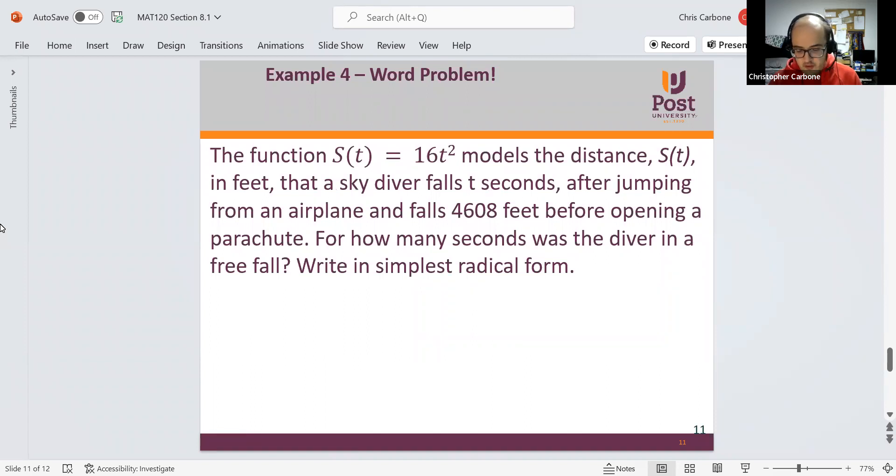For example 4, I have the function s of t equals 16t squared models the distance, s of t, in feet that a skydiver falls t seconds after jumping from an airplane and falls 4,608 feet before opening a parachute. And we want to know for how many seconds was the diver in a free fall and write in simplest radical form. So 4,608 equals 16t squared. We can first divide by 16 and get that t squared equals 288.